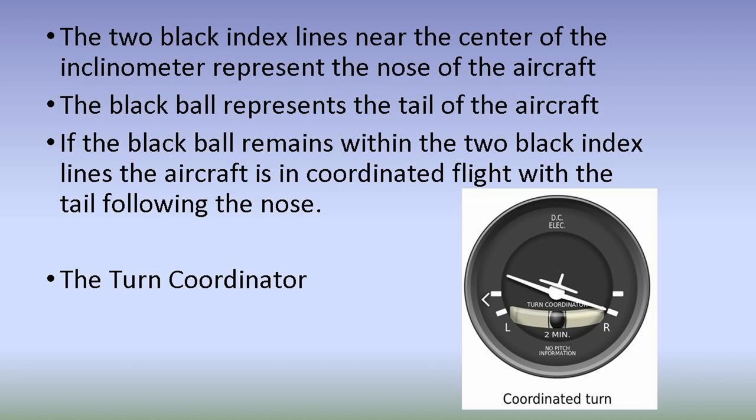At the bottom of the turn coordinator there's an inclinometer with two black index marks in the center. The area between those marks represents the nose of the aircraft. When the black ball is between those index marks, the tail is following the nose. If the tail moves out to the right or left, you're in uncoordinated flight.